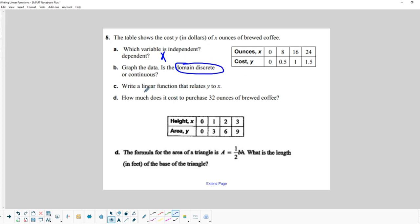Okay? And then write a linear function that relates y to x. So we notice that when x is 0, what's the y value? 0. So that means our y-intercept, if we were to graph this, is 0. And then what's our slope? For every 8 ounces we go up, we go up by 50 cents, right? So m would be 8 over 0.50, 8 ounces for 50 cents.